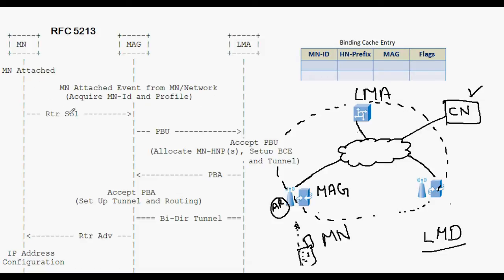The router solicitation message is sent by the mobile node to the mobile access gateway. Upon receiving the router solicitation message, the mobile access gateway sends a proxy binding update to the local mobility anchor. The proxy binding update will contain the details of the mobile node — the mobile ID and MAC details — which are required for the binding cache entry.